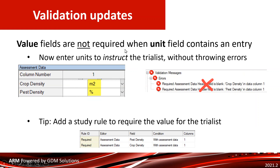The change we made to ARM is to relax this requirement for certain fields. We didn't do this everywhere — something like the formulation concentration still requires both the unit and the value — but in certain places, like assessment column density units, where you'd logically want to have the unit as an instruction, you won't have those errors come up. You'll be able to put in the density unit in an assessment column and there will be no validation error.